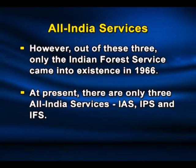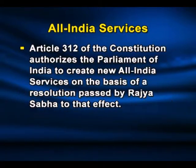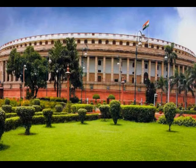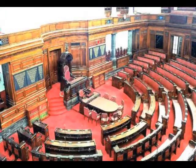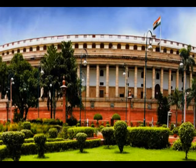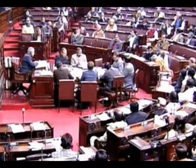At present, there are only three All India Services: IAS, IPS and IFS. Article 312 of the Constitution authorizes the Parliament of India to create new All India Services on the basis of a resolution passed by the Rajya Sabha to that effect. Thus, a new All India Service can be created only by an act of Parliament and not by a resolution of Rajya Sabha alone. However, Parliament cannot do so without the recommendation of Rajya Sabha. This power is given to the Rajya Sabha to protect the interests of the states in the Indian federal system.